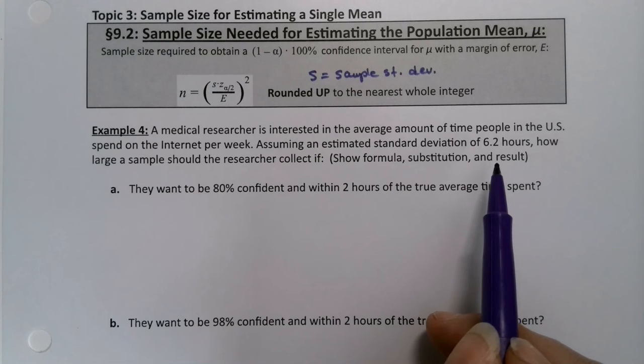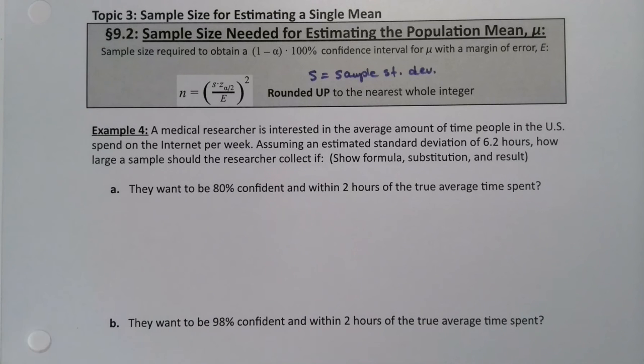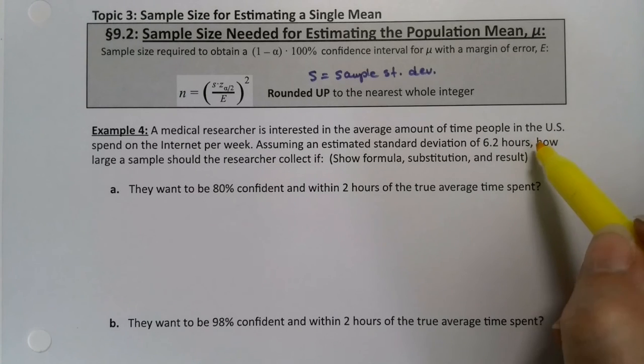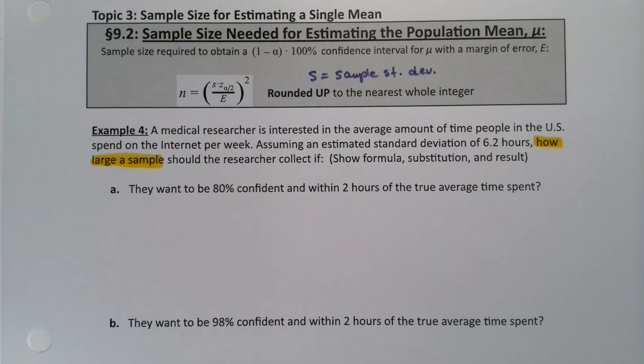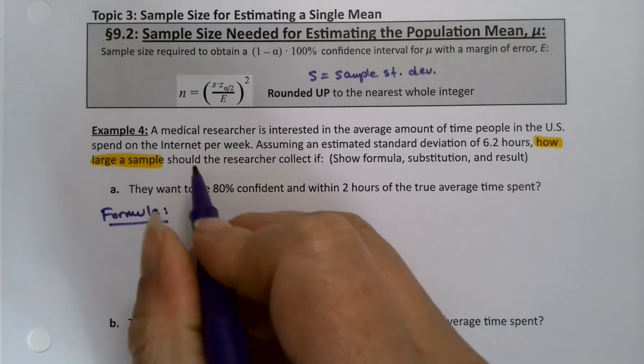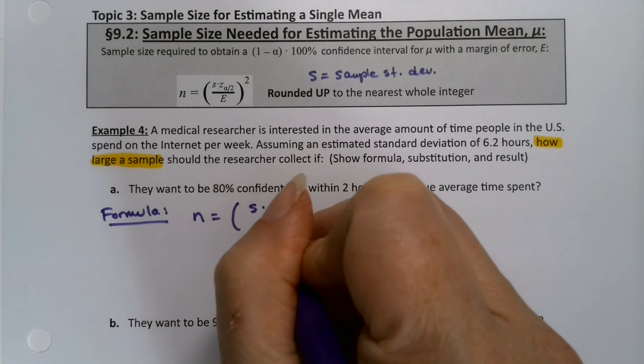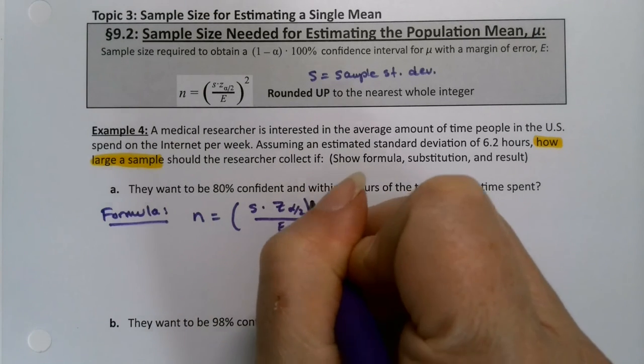Even saying the confidence part right here does not make it a confidence interval question. It's a sample size question because they want to know how large a sample. See that word right there? How large a sample? Sample size. That's how you can tell. So you got to look for those question words.